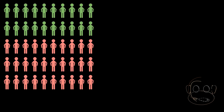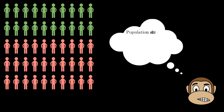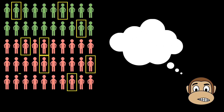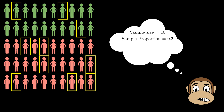We have a school of 50 students and 20 of them purchase food from the canteen every day. The population size is 50 and the population proportion of canteen purchases is 0.4. But say we want to estimate the number of students who purchase from the canteen without asking the entire population. We could ask 10 random students — 3 of them purchase from the canteen, so the sample proportion is 0.3.